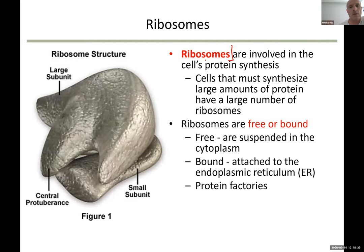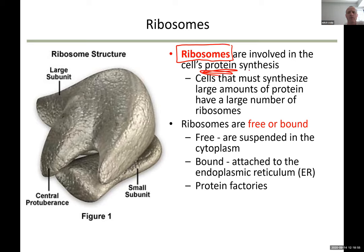Ribosomes are found in both bacteria and eukaryotes because they have one extremely important function: synthesizing proteins. Our body requires a lot of proteins — we are made up of proteins — so we constantly need to synthesize them in very large amounts.